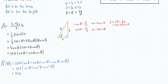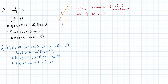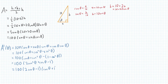Using our trig identities, we can rewrite this as cos theta plus cos squared theta, then rewrite sine squared theta as 1 minus cos squared theta. This simplifies to 100 times (2 cos squared theta plus cos theta minus 1). Factoring this out gives 100 times (2 cos theta minus 1)(cos theta plus 1).